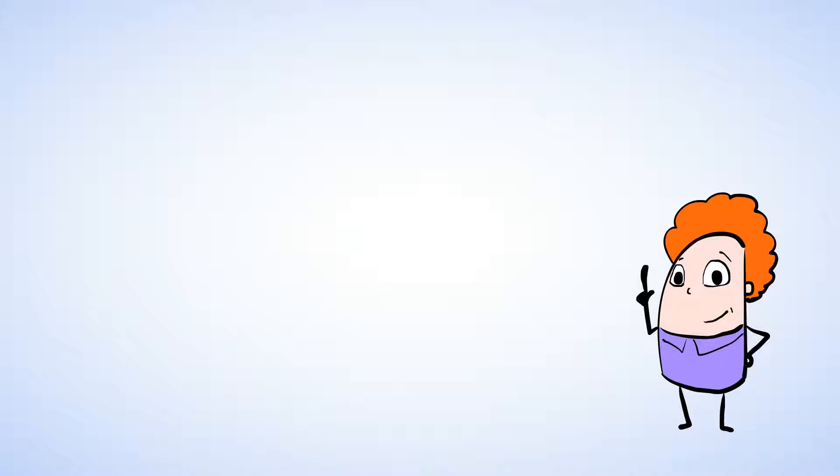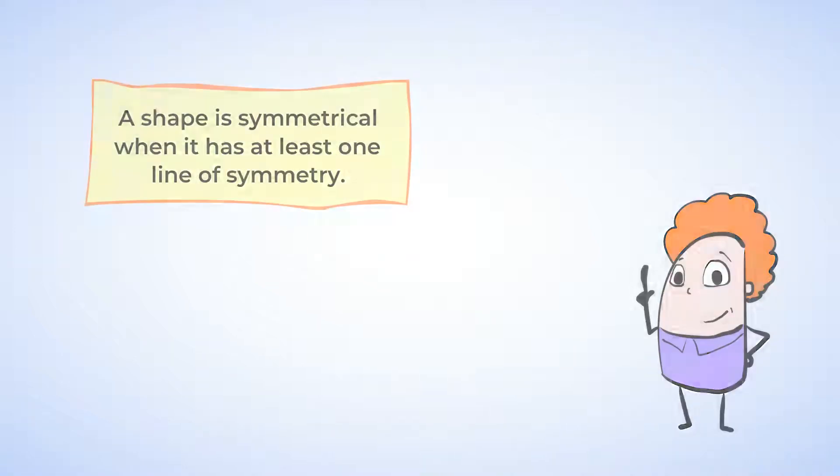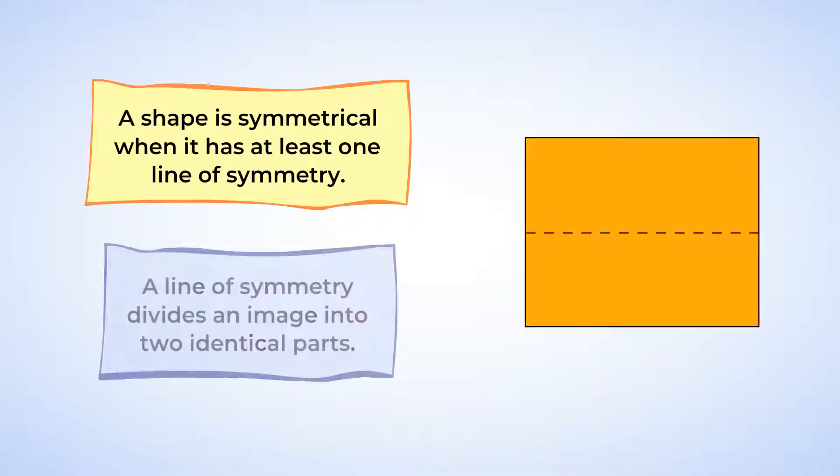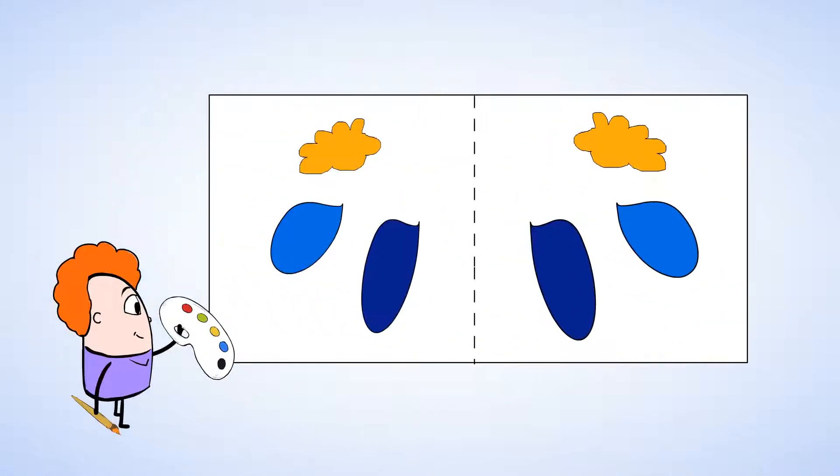But let's take a sec to explain exactly what that means. A shape is symmetrical when it has at least one line of symmetry. And a line of symmetry divides an image into two identical parts. The fold in the paper we just drew on is the line of symmetry since the right and left sides are identical.